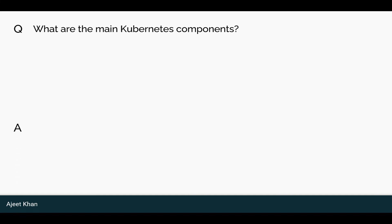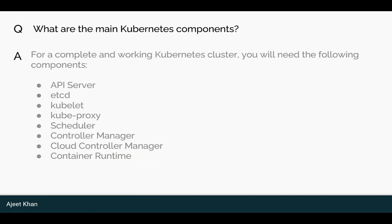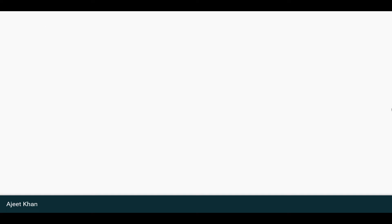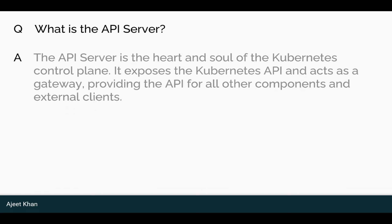What are the main Kubernetes components? For a complete and working Kubernetes cluster, you will need the following components: API Server, ETCD, Kubelet, Kube Proxy, Scheduler, Controller Manager, Cloud Controller Manager, and Container Runtime.